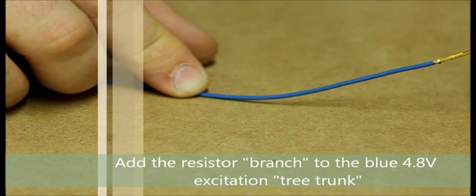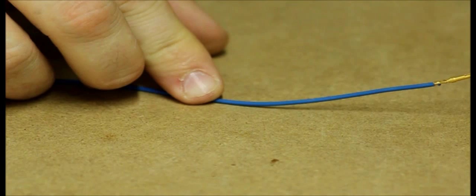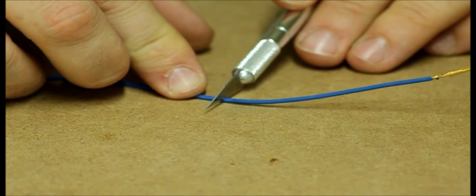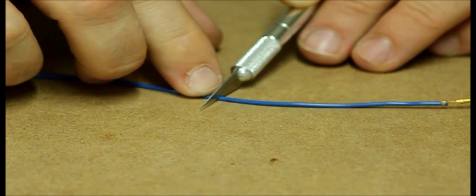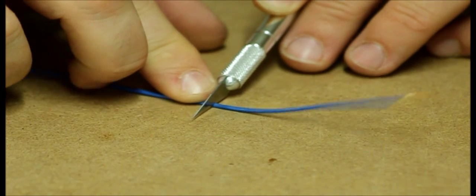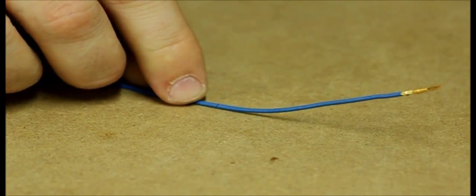Step number one: take the 4.8 excitation wire, remove it from the connector. Take an exacto knife with a relatively sharp blade, set it on the sheathing, press gently and roll the wire underneath the blade. This will cut the sheathing, but don't press so hard that it will actually cut the wire.